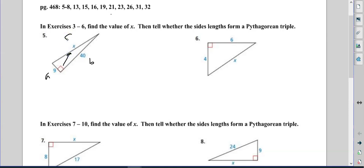So here we have 9 squared plus 40 squared equals c squared. 9 squared is 81, 40 squared is 1600, so that gives me 1681 equals c squared.